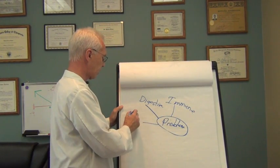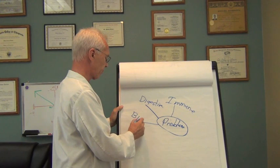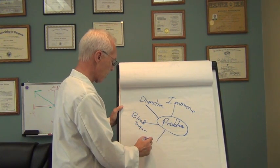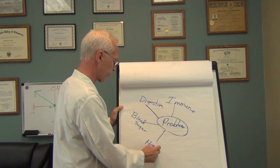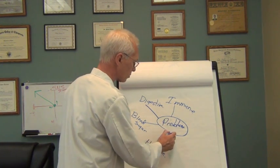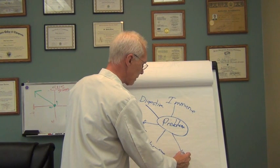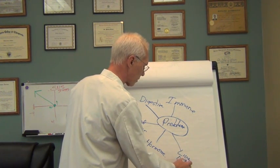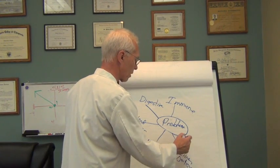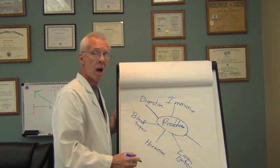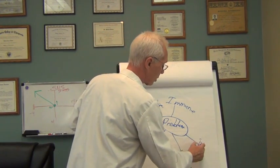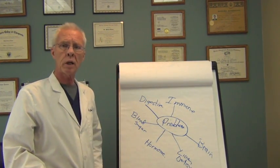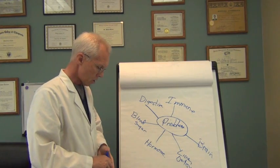We're going to look at your immune system. You could have blood sugar problems. You could have hormone imbalances. Your liver might not be detoxifying properly, and on and on. Your brain may not be functioning properly. In other words, you might be in the stress mode.